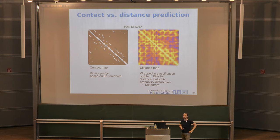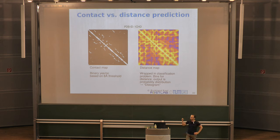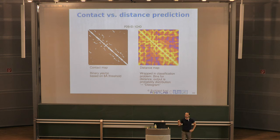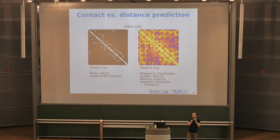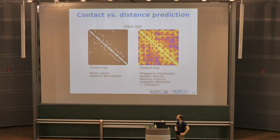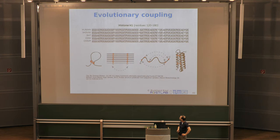That actually works fairly well, and the performance is not much worse than just predicting contacts. We're in a gradual shift where the most recent methods do distance predictions and then simply reduce them to a contact map for comparison with other methods for historical reasons, since that's still the category in CASP. To convert distance bins to a contact map, you take all bins representing distances below 8 Ångström, sum the probabilities, and get the probability for contact. Some people call this a distogram.